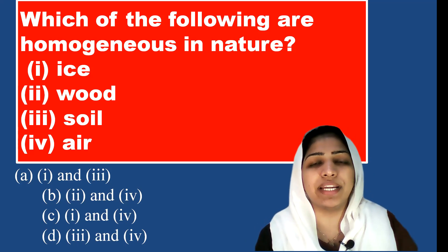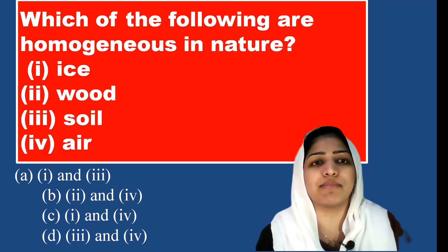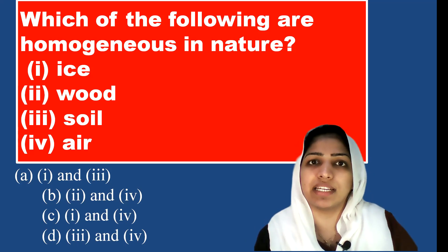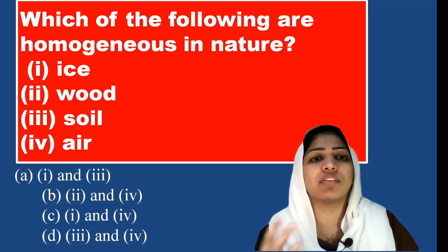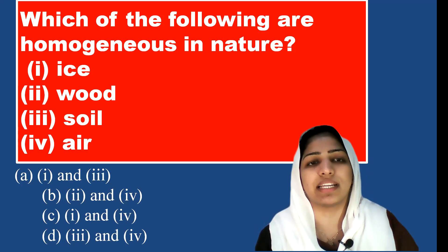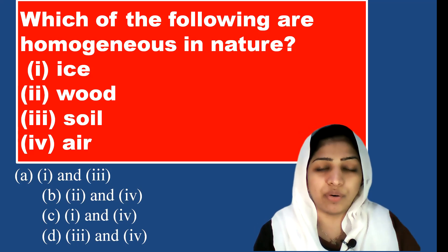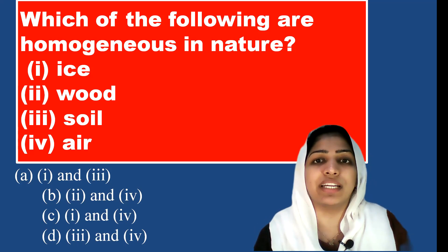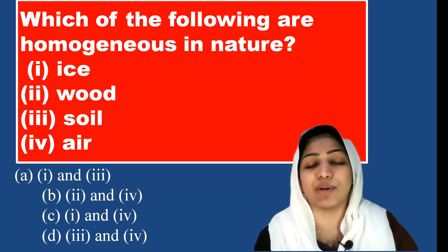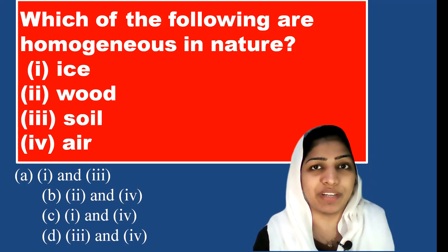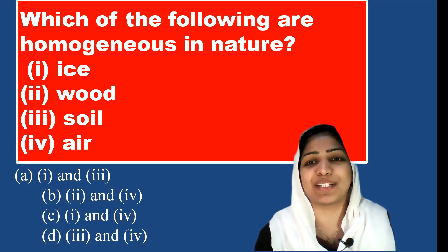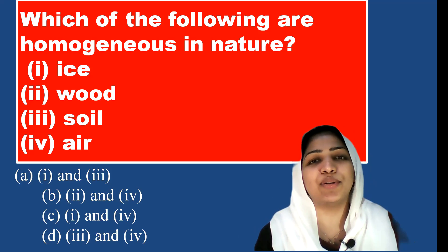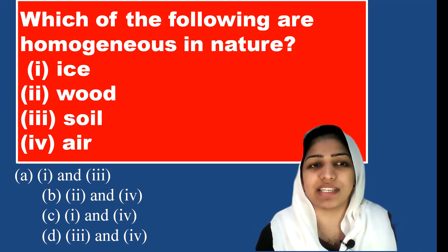If you take soil, you can find pebbles, dirt particles, and sand — it is heterogeneous. If we take a little soil, it will not have an equal number of pebbles and dust particles. It is a heterogeneous mixture.